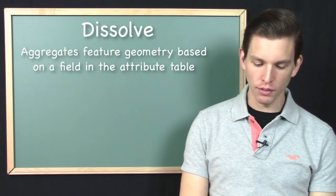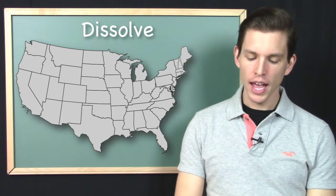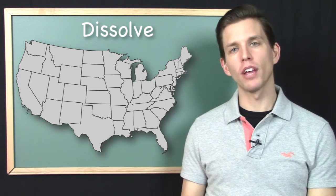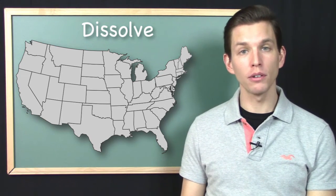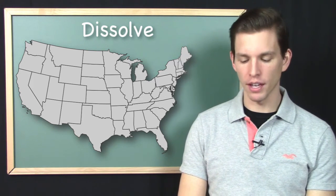So here's our illustration of Dissolve. Let's say that we have all of the states in the United States and then when we open up the attribute table we see that we do have a field in the attribute table that tells us what region of the country each state is in.